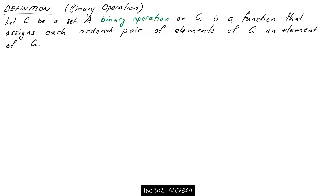A quick recap from last video: we're dealing with sets with binary operations defined on them. Essentially we're dealing with a set and an operation such that if you pick out two elements of your set and perform the operation on them you'll get another element which is also in the set. That rules out things like addition on odd numbers, because that gives you an even number which is not in the set.